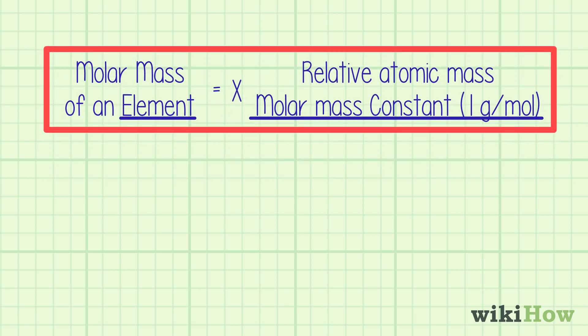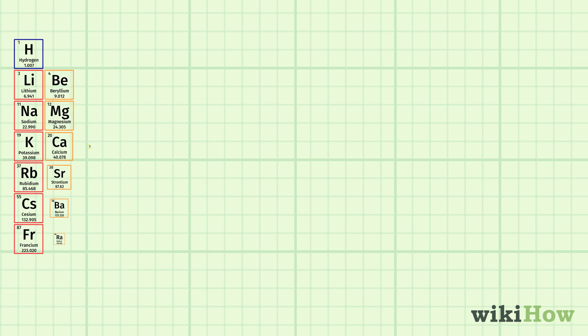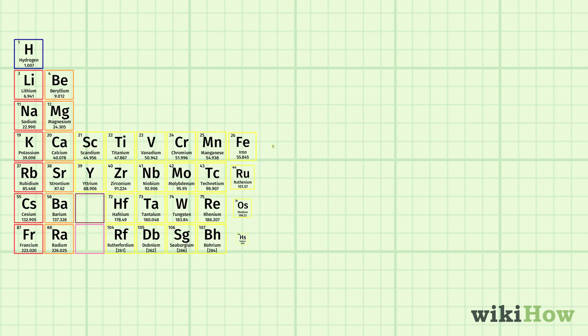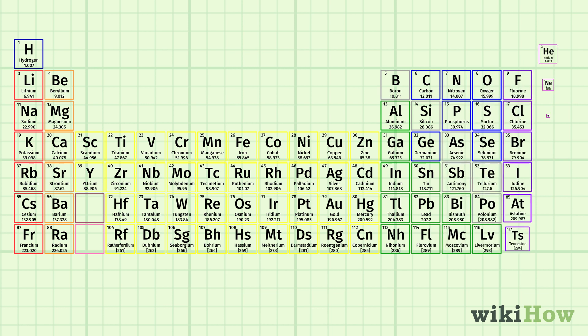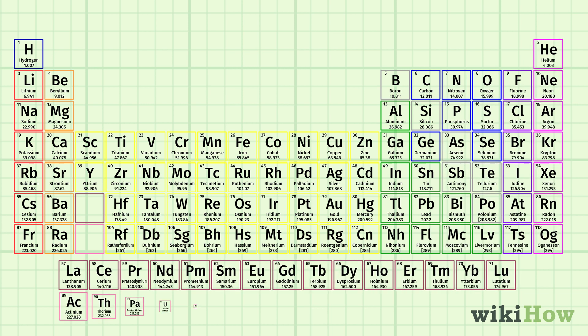To find an element's molar mass, start by checking the periodic table for the relative atomic mass of the element. This is usually located under the symbol and name of the element.